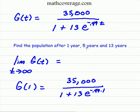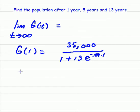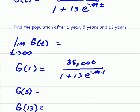Then you do the same thing for 5, and then the same thing for 13 years. You're going to find g of 5, and then g of 13. And I'm going to go ahead and let you plug that into the calculator and work that out. Now, what about this here, the limit of g of t as t goes to infinity?